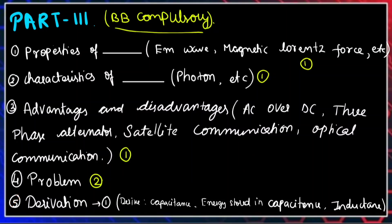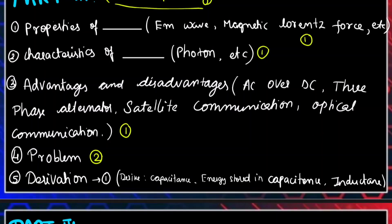We also have derivation-type questions. For example, the hydrogen spectrum — everyone wants to answer these for the 5-mark questions. We will derive capacitance, the energy stored in capacitance and inductance, and the inductance of a solenoid. Other derivations include resistance in series, parallel capacitance, and series capacitance combinations.